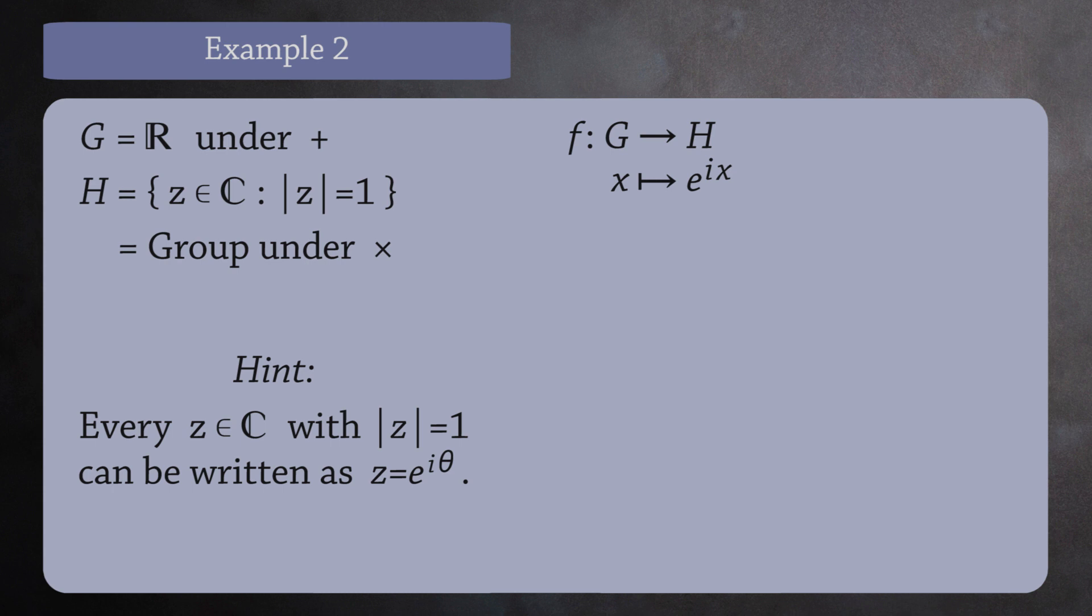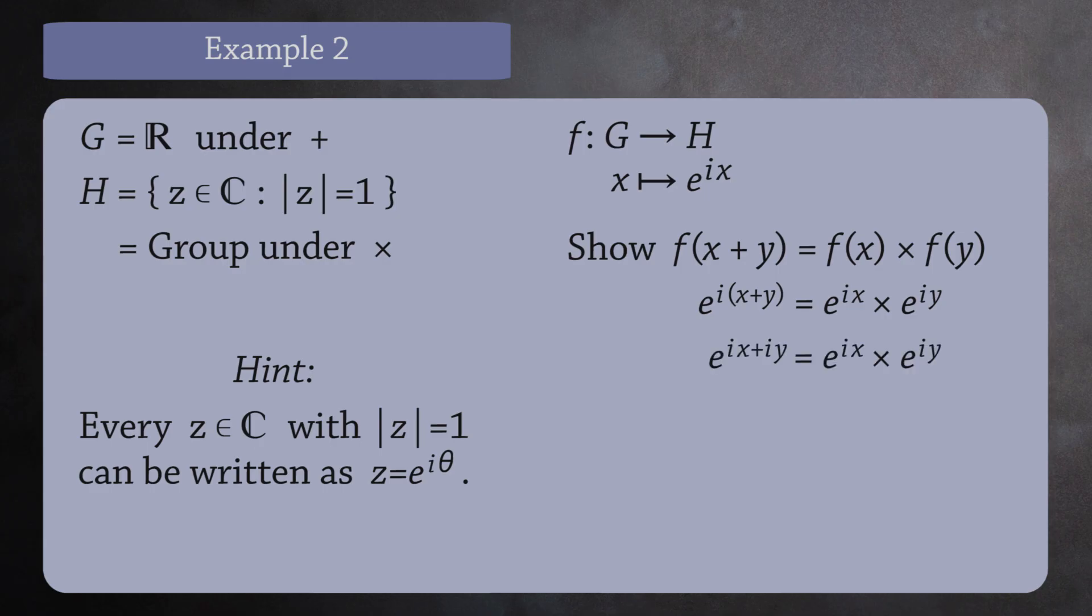For f to be a homomorphism, we must have f(x+y) equals f(x) times f(y). This is true only if e to the i times (x plus y) equals e to the ix times e to the iy. We can see this is true by expanding the left-hand side, then using the rules of exponents. It's true, f is a homomorphism.